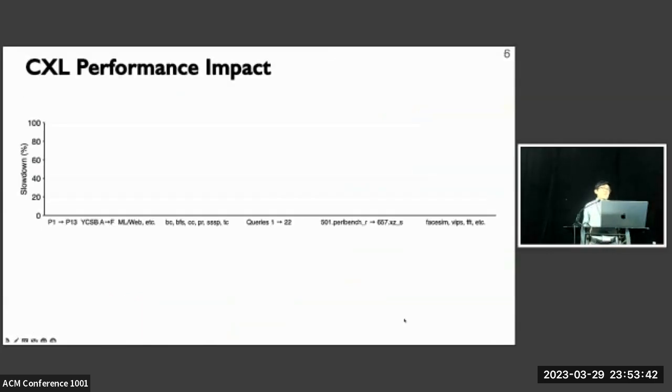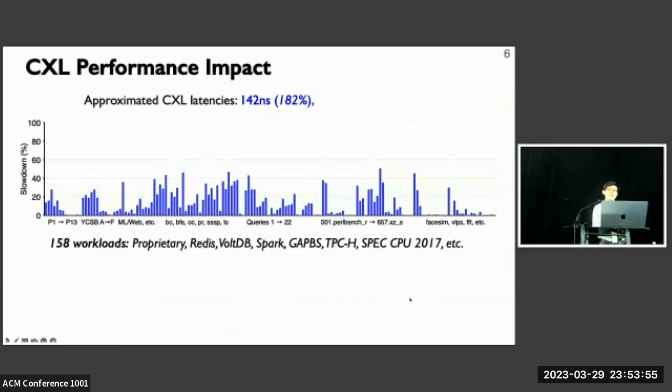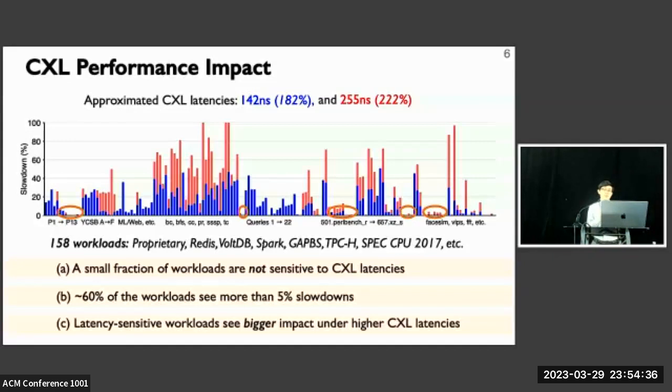To better understand the performance impact of CXL memory, we studied 158 representative workloads in the cloud shown in the x-axis. We compared the workload performance under CXL with the NUMA local settings and calculated the slowdown. We approximate the CXL latency around 142 nanoseconds using a dedicated NUMA node with no physical cores. The workload slowdowns are shown in the bars. We observed that a small fraction of workloads are not sensitive to CXL latencies and don't experience performance impact. But around 60% of workloads experience more than 5% slowdowns. For latency-sensitive workloads, they experience much bigger performance impact under higher CXL latency as shown by the red bars.